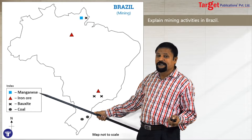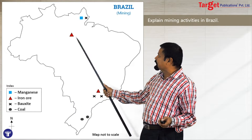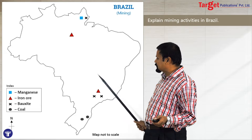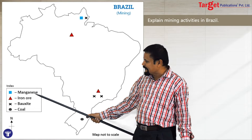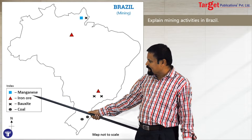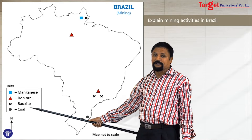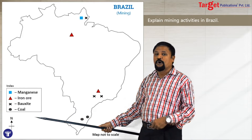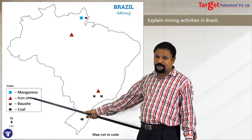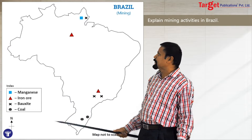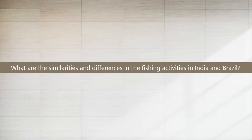The next topic is about the mining activities in Brazil. Show a few important minerals as well as the places where they are available. The first one is manganese, then iron ore, bauxite, and coal. You may not be able to show all the places and minerals, but at least show some major places and some minerals.